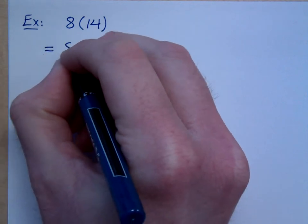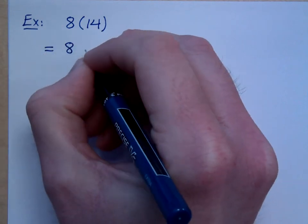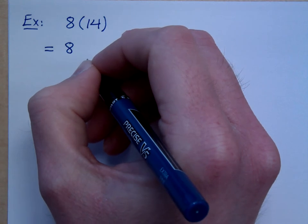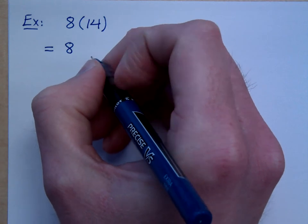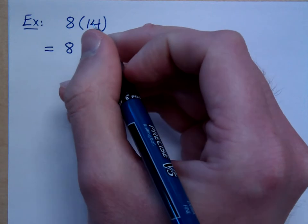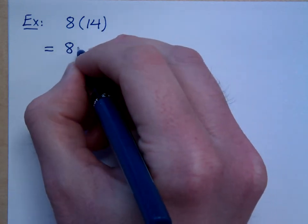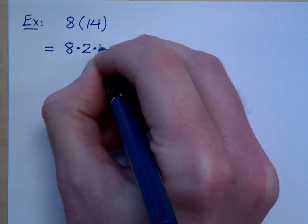I'm going to break this down and say that 14, how could you rewrite 14 instead of 10 plus 4? 9 plus 5. You could say 9 plus 5, but what about in terms of its factors? What numbers would you multiply to get 14? 2 times 7, right?